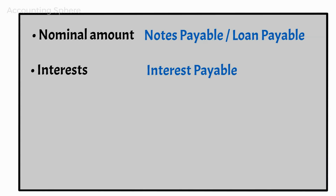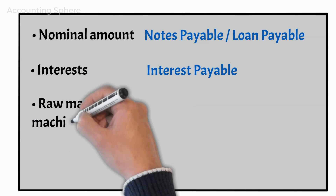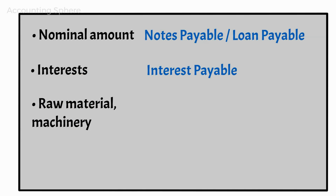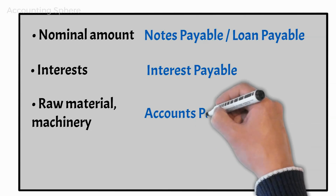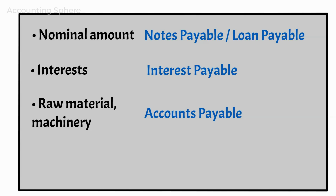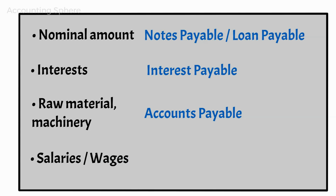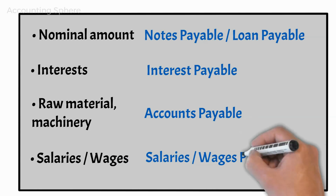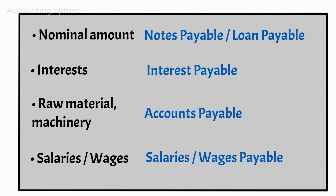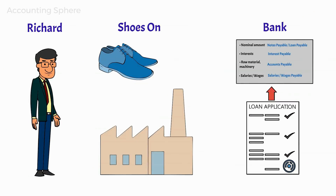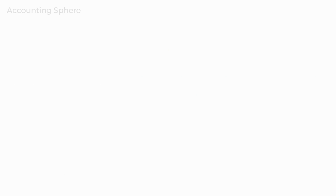Also, Richard will need to buy material to produce the shoes and machinery to assemble them. As he buys on credit, these items will be recorded in the accounts payable account. Payment for the wages that he owes to employees will also be necessary and are to be recorded in the wages payable account. Now, assuming the factory is up and running and customer orders start to arrive, other obligations will arise.